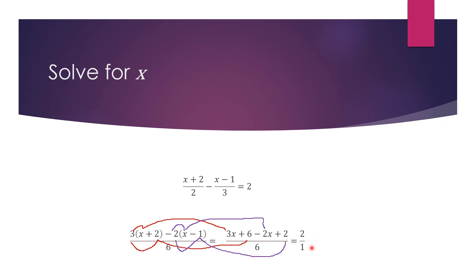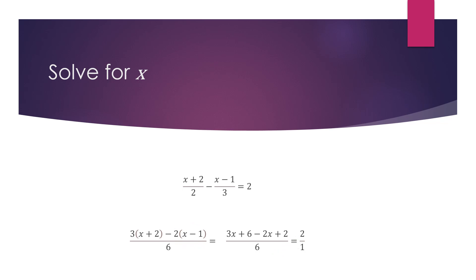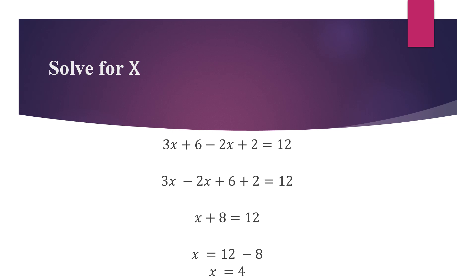We place 2 over 1 on the other side because 2 over 1 is the same as 2, and our next step is to cross-multiply. We multiply the numerator by the denominator on the other side, and 6 by 2 gives us 12. The results of the cross-multiplication are 12 on one side and (3x + 6 − 2x + 2) on the other. We then group the like terms: 3x minus 2x gives x, and 6 plus 2 gives 8.